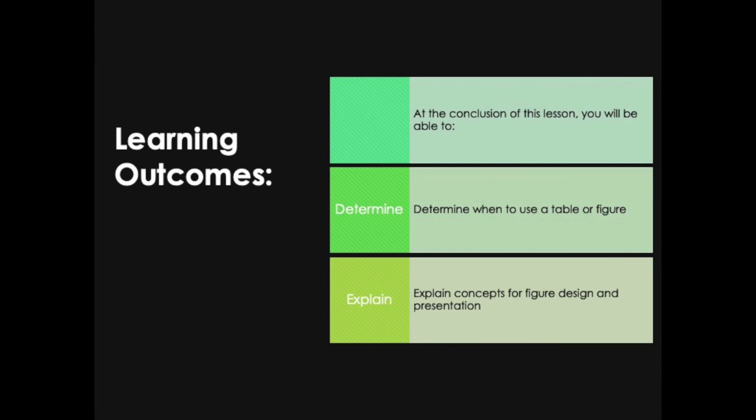To wrap up the lesson, let's reiterate the learning outcomes. At the conclusion of this lesson, make sure you can determine when to use a figure or when to use a table, and which type of figure to use. Be able to explain the concepts of figure design and presentation in terms of readability and making the reader's job easy. Make sure you accomplish these learning objectives before you move on to the next lesson. Happy writing!